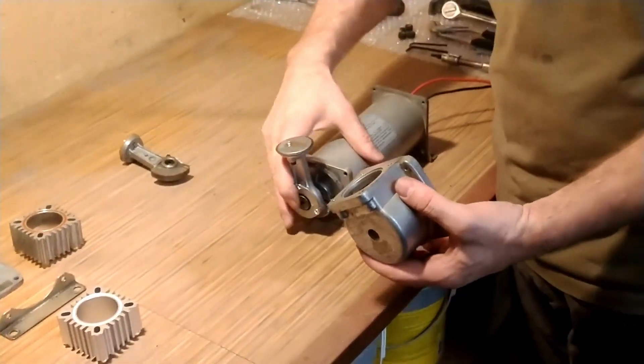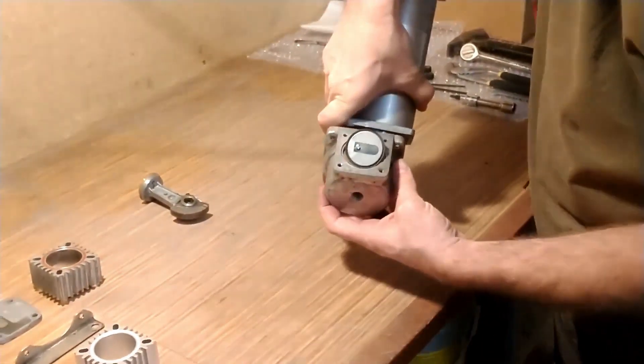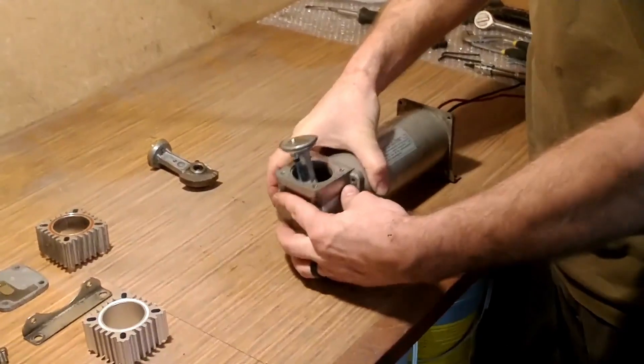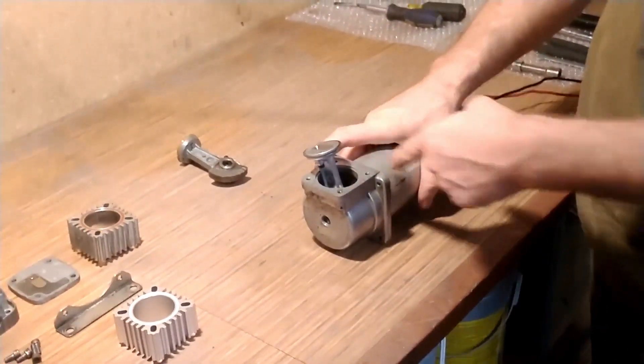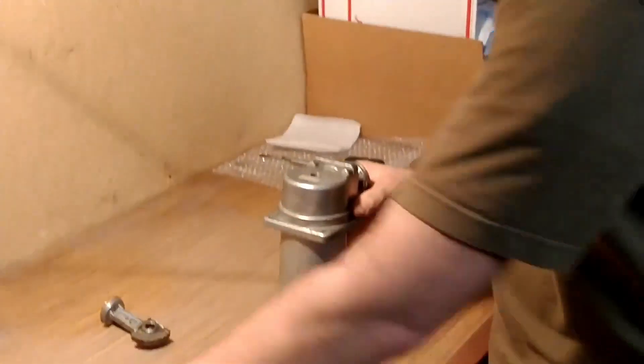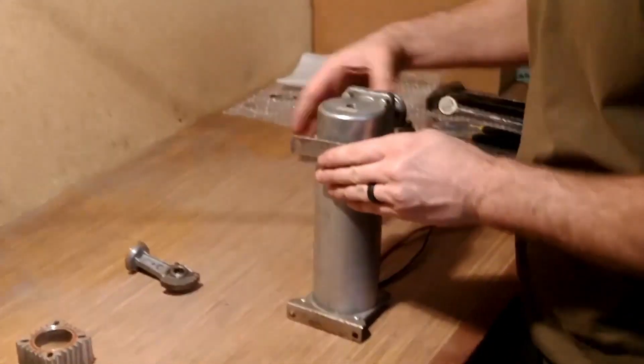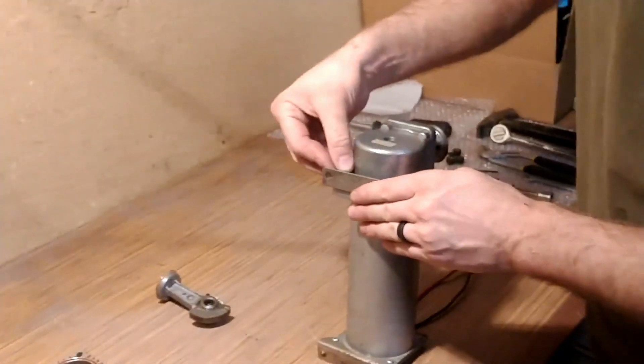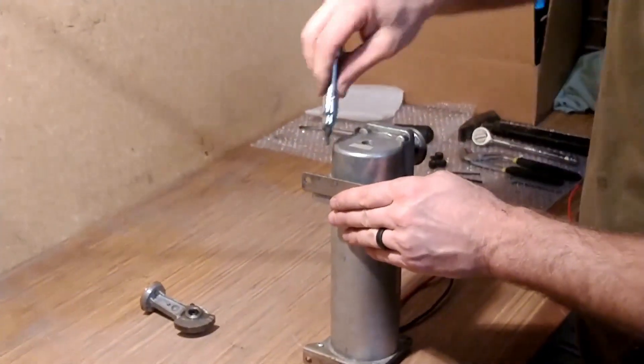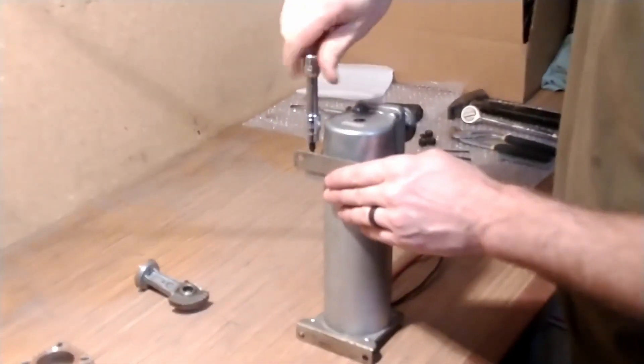We're going to put the end cap back on. Again, the piston is just going to go through the end and through that hole and back in. We want to make sure that sealing surface, that O-ring, was nice and clean. And then put our feet on to help hold that end cap in place.